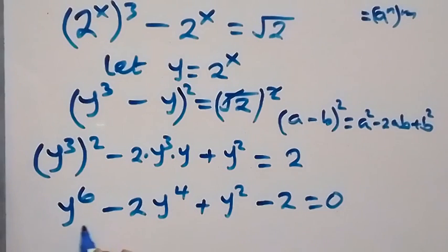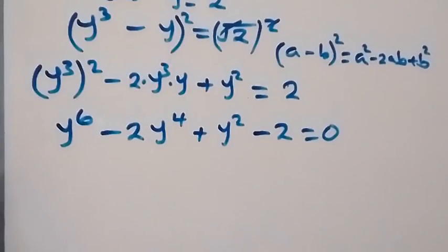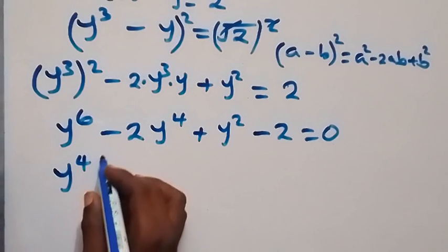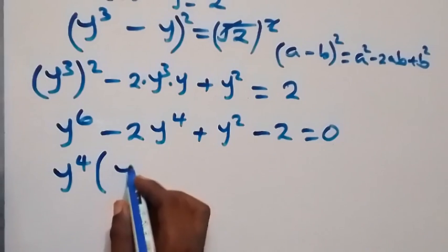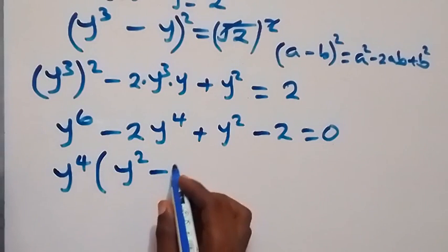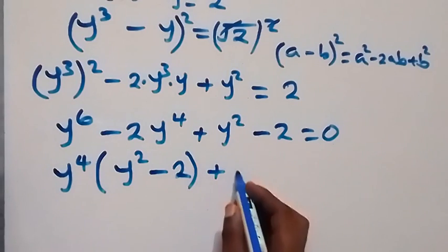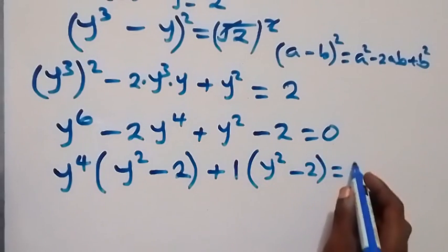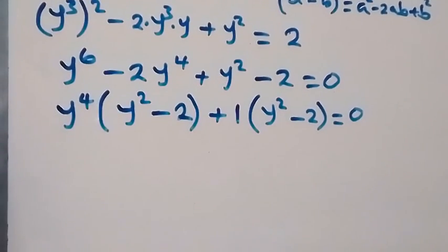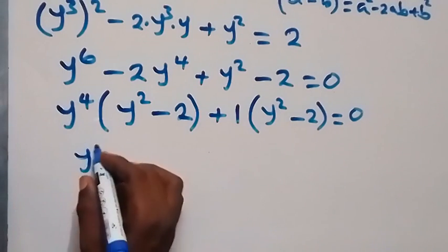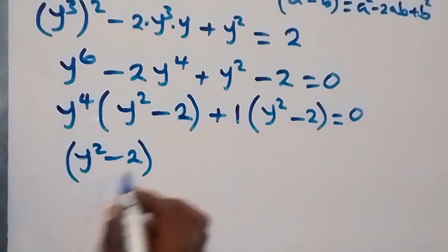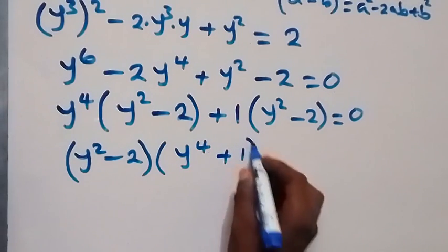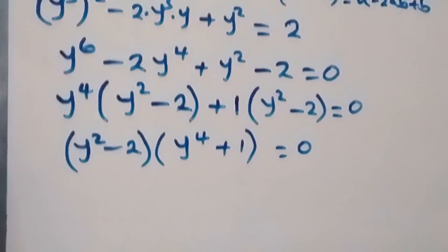From here, when we group and factor what is common from these terms, we can take y raised to power 4 out. We have y to the power 4, leaving y squared minus 2, then plus 1 times y squared minus 2, which is equal to 0. So y squared minus 2 factored out, multiplied by y raised to power 4 plus 1, equals 0.